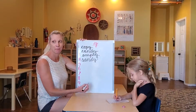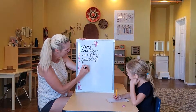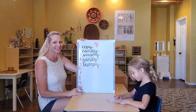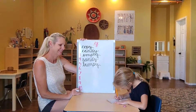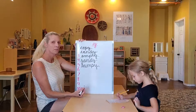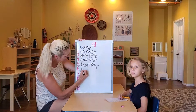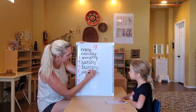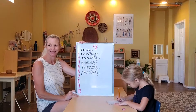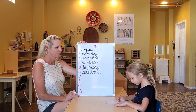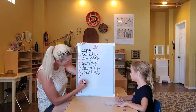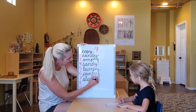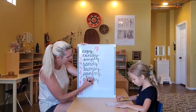Number 5: bumpy, B-U-M-P-Y. Number 6: pantry, P-A-N-T-R-Y, pantry. Number 7: slinky, S-L-I-N-K-Y, slinky.